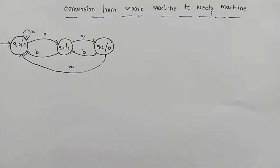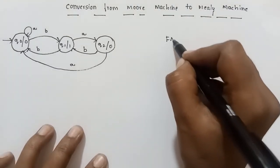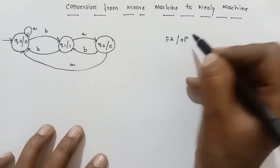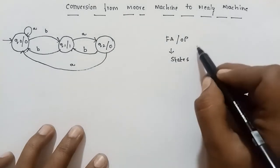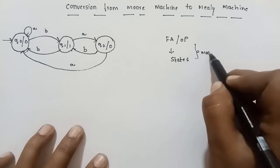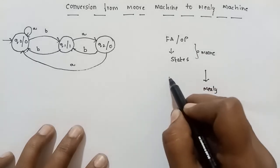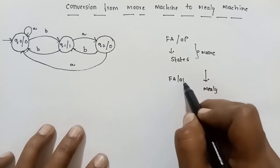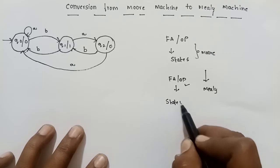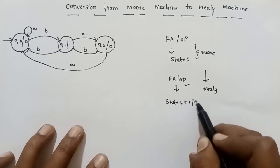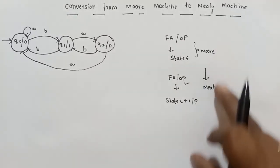As we discussed in the previous video, a Moore machine is nothing but finite automata with output, and the output depends on the state. This Moore machine will be converted to a Mealy machine. A Mealy machine is also finite automata with output, but the output depends on states plus inputs.